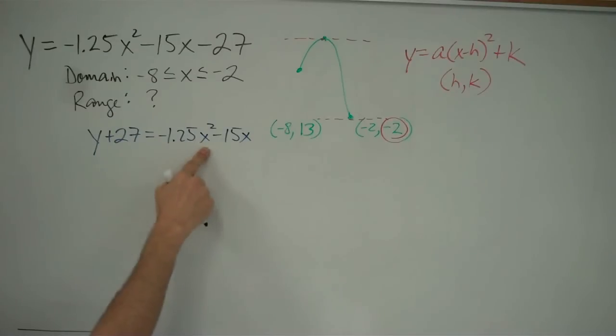And then I'm going to divide everything by negative 1.25, which is kind of a mess. I get y over negative 1.25 minus 27 divided by negative 1.25 is 21.6. As you can tell, I did this with the calculator earlier. I cannot do it that fast in my head.